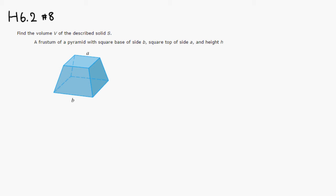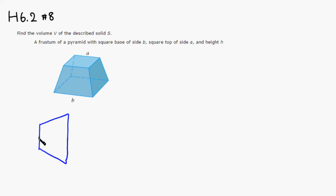First thing I would do is look at the side view of this thing. You have A right there and B here. The side view is going to be a trapezoid — maybe an isosceles trapezoid. I'm going to put the x-axis in the middle and the y-axis along the top.